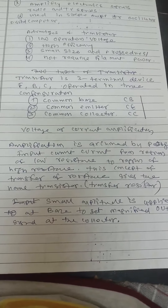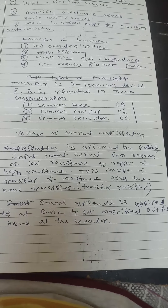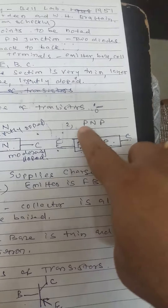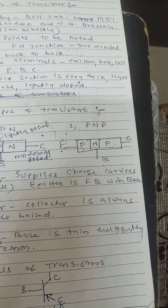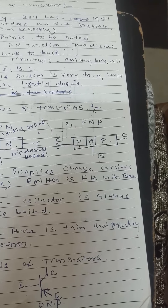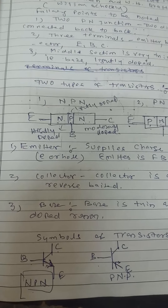We can call it a transistor for short. A small amplitude signal is applied to the base to get a magnified output signal at the collector. We have the NPN transistor and the PNP transistor. The symbols are shown here — this is the PNP transistor and this is the NPN transistor. For both transistor types, the terminals are the same.